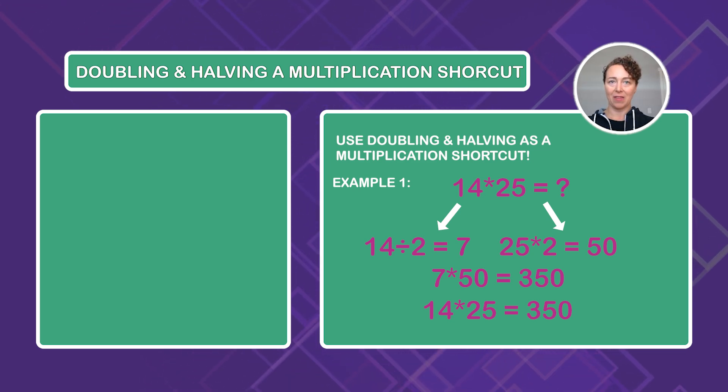Let's talk about why this works. Doubling and halving works because the process changes the quantities involved without changing the overall product. By halving one number and doubling the other, we're essentially splitting the quantity into smaller parts and then combining them in a different way, maintaining the same total value. It's based on the associative property of multiplication, which is a topic for another day.